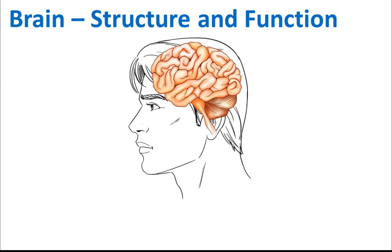Let's start with the structures and functions of the brain. We can divide the brain into three main structures. The first one is called the cerebrum — this is the big one, the big brain here.